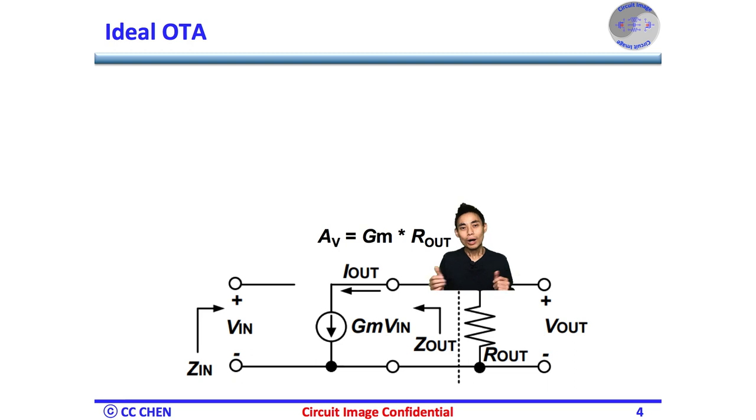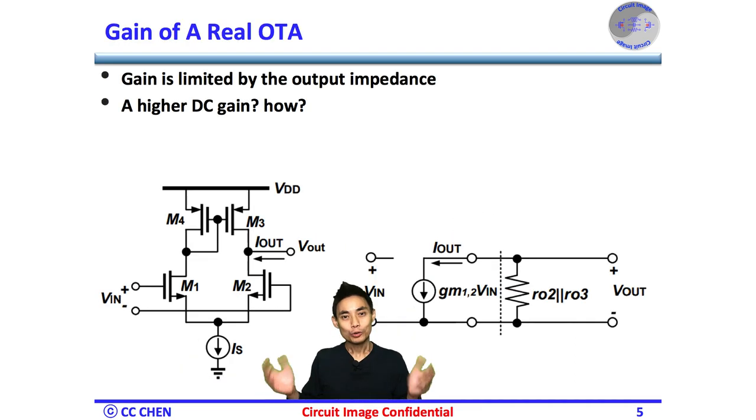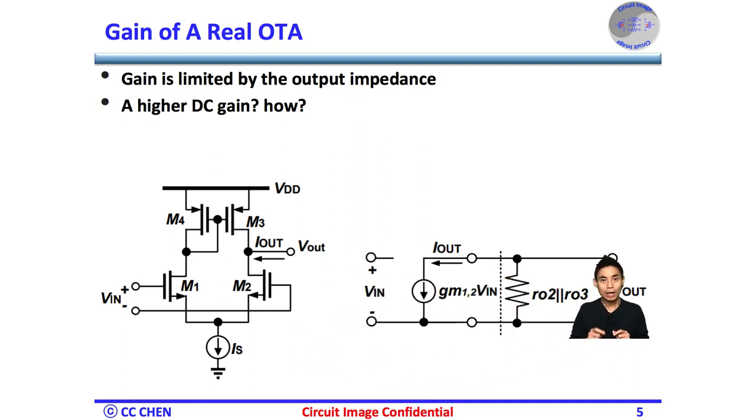Even though other properties of the OTA are important in a real OTA, let's begin with how the real gain is. We could start with a simple OTA design, and the voltage gain is Gm times RO. The Gm is the input transconductance of M1-2, and the RO is the output impedance, RO3 of M3 in parallel with RO2 of M2. In advanced technology, the transconductance output impedance is limited, and the DC gain might not be big enough to meet your needs. What should we do?